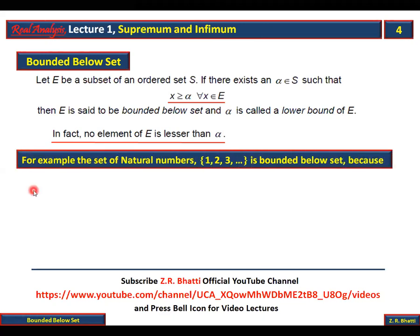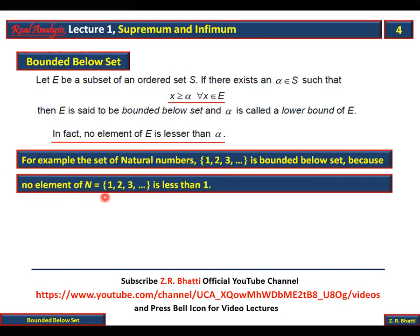For example, the set of natural numbers {1, 2, 3, ...} is a bounded below set, because no element of this set is less than 1. Yahan bhi definition keh rahi thi ki koi alpha mil jaana chahiye aur koi element us se chota na ho. To alpha = 1 mil gaya, aur natural numbers ka koi element 1 se chota nahi hai. Isliye yeh set bounded below set hoga aur lower bound 1 hogi.